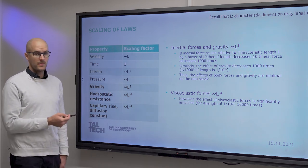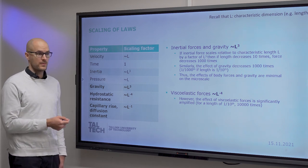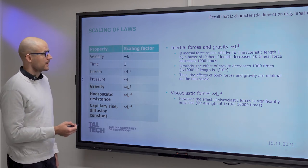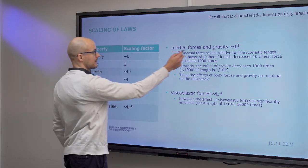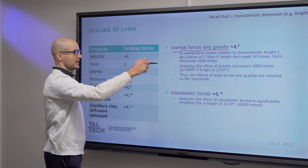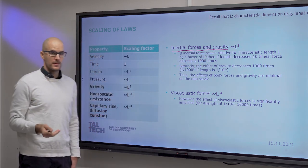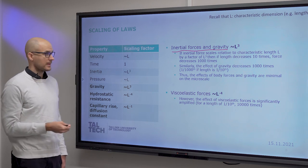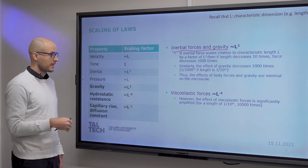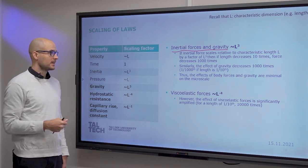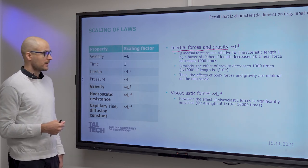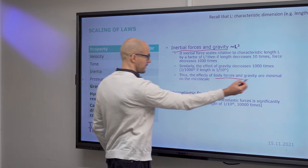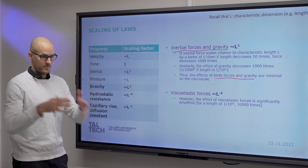And so this here is a table of how the different quantities and forces scale with changing of the characteristic length. Inertial forces and gravity are cubically proportional. So if inertial force scales relative to the characteristic length by a factor of L cubed, then if the length decreases 10 times, force decreases a thousand times. And similarly, the effect of gravity is also proportional to L cubed. So the effects of body forces and gravity are minimal on the microscale. I just want to drive this point through.